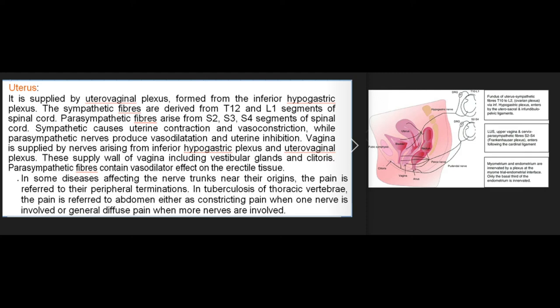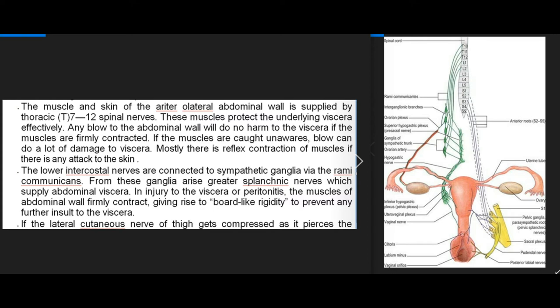Clinical anatomy: in some diseases affecting nerve trunks near their origins, pain is referred to their peripheral terminations. In tuberculosis of thoracic vertebrae, pain is referred to the abdomen as constricting pain (one nerve) or general diffuse pain (more nerves). The muscle and skin of the anterolateral abdominal wall is supplied by thoracic T7-T12 spinal nerves, which protect underlying viscera. Any blow will do no harm if the muscles are firmly contracted; if caught unawares, blow can damage viscera. The lower intercostal nerves are connected to sympathetic ganglia via the rami communicantes; from these ganglia arise greater splanchnic nerves supplying abdominal viscera. In injury to viscera or peritonitis, the muscles firmly contract giving board-like rigidity to prevent further insult to the viscera.